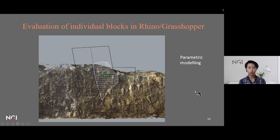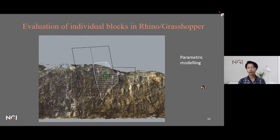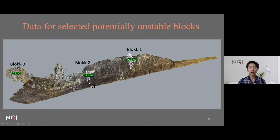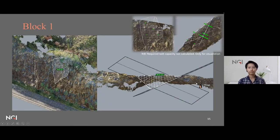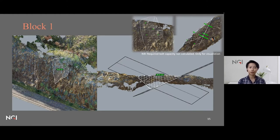We also used Rhino 3D with Grasshopper to extract potentially unstable blocks and calculate their volumes. Rhino 3D and Grasshopper is a 3D CAD program that allows scripting and parametric modeling, making it useful for both visualization and calculation. Examples of potentially unstable blocks were identified with calculated volumes, and Grasshopper scripts can also demonstrate how rock bolts might be placed to stabilize these blocks — a useful visualization tool with future potential for automated calculation.